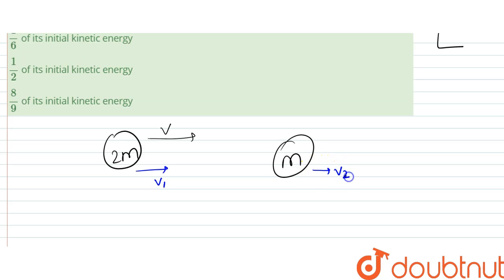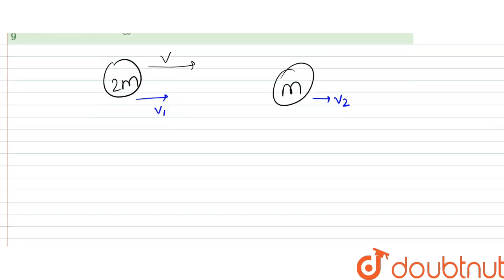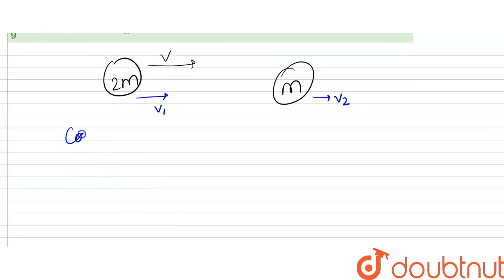this travels with v₂. Right, so what we can say is that we can use conservation of momentum first. In each and every type of collision, momentum is always conserved, so it